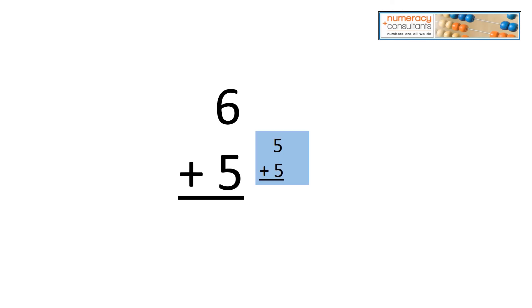Five plus five, we're under by one, so we have to add. Six plus six, we're over by one, so we'd have to subtract. Either way, the answer would be 13.